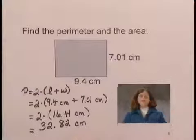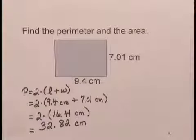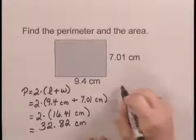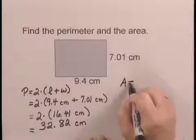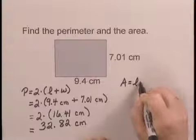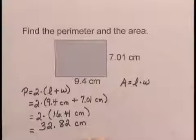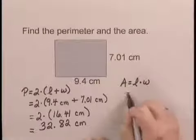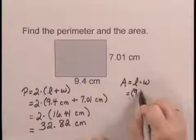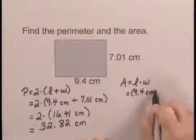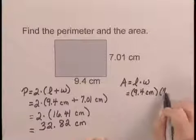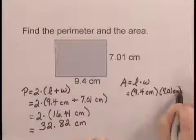To find the area, we will again start by writing the formula for the area of a rectangle. A equals length times the width. And we substitute 9.4 centimeters for the length and 7.01 centimeters for the width.